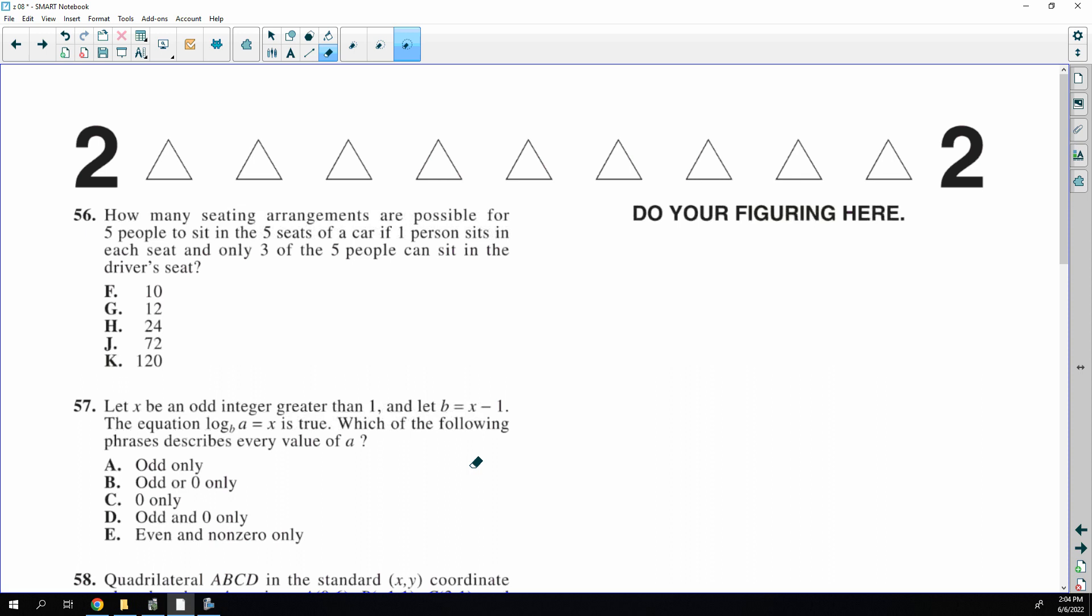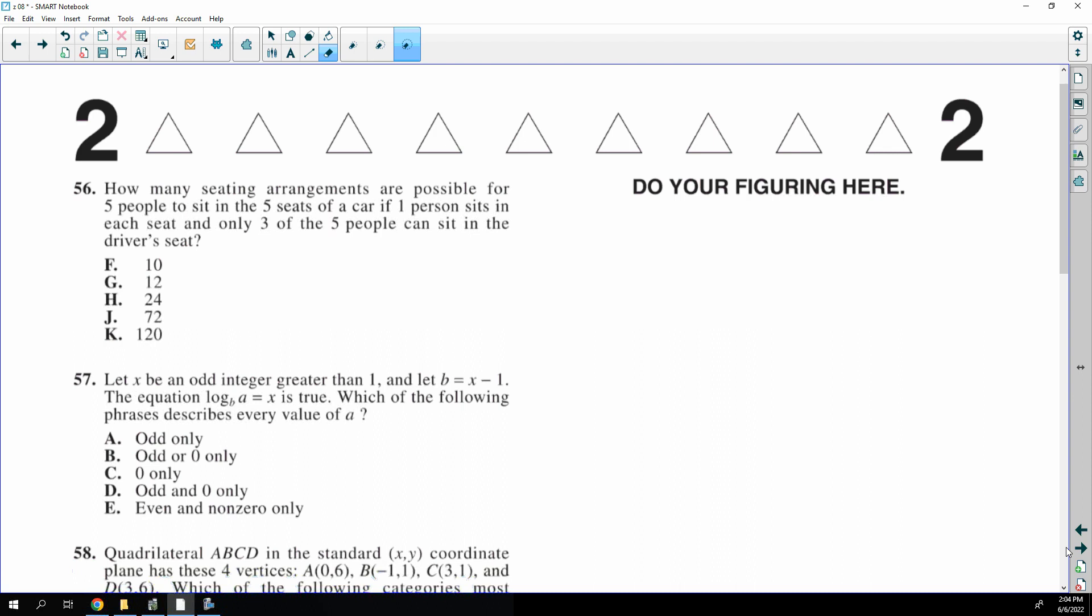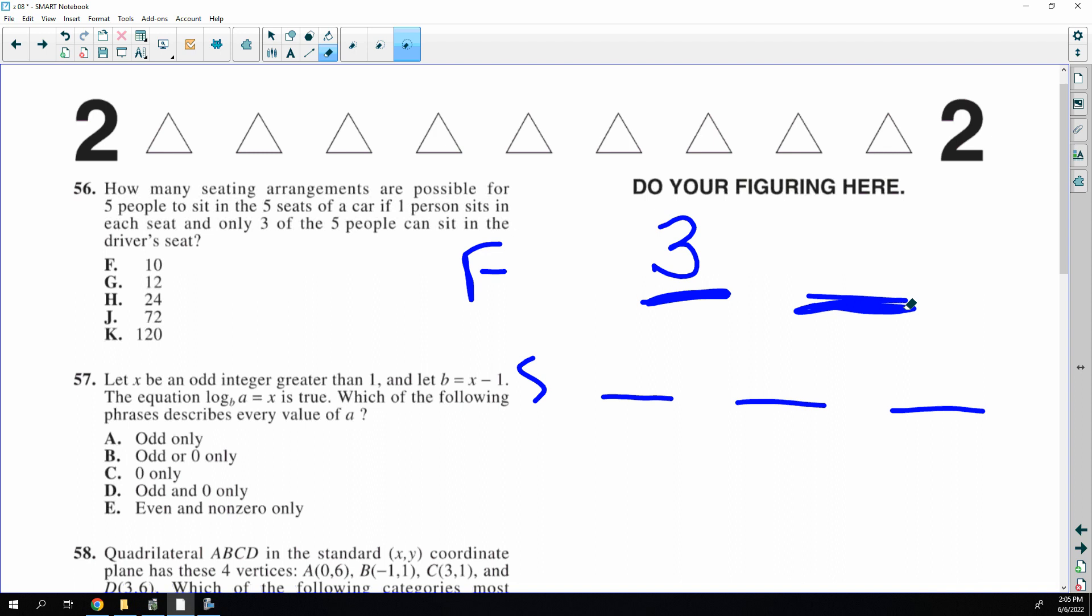How many seating arrangements are possible for five people to sit in a car? So I guess this is the front seat and this is the back seat, but only three can sit in the driver's seat because the other two are too little. So three can go there. Now how many how many could go here? Technically five, but four are left because I used one of the people, and then technically five but I've used two of the people, technically five but I've used three of the people. So it's three times four factorial for the answer. So it would be 12, 36, 6, 72.